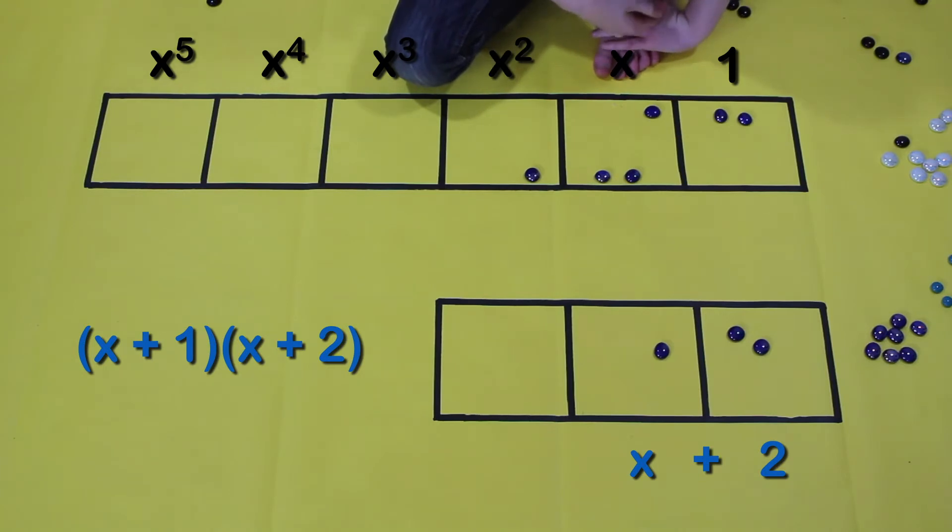So x plus 1 times x plus 2 equals x squared plus 3x plus 2.